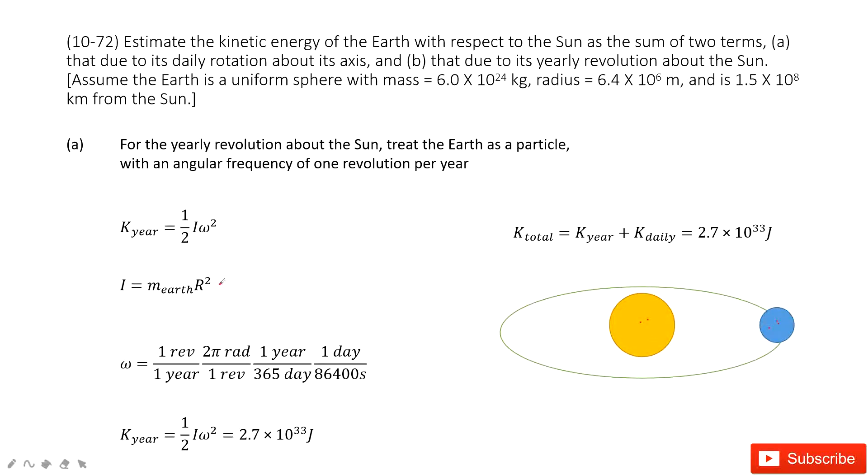So the moment of inertia is m R squared. This R is the distance from the Earth to the Sun. Do you agree? Yes.